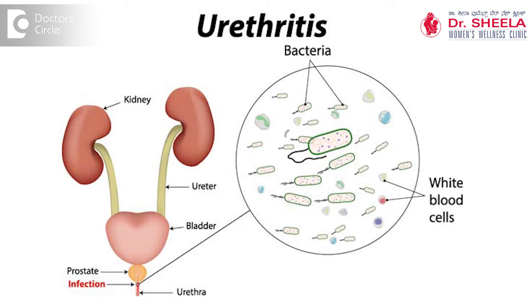What are the organisms which cause urethritis? The most common organism is E. coli and other bacteria which are present in the stool. The next common cause is sexually transmitted diseases like gonorrhea caused by gonococci, trichomoniasis caused by Trichomonas vaginalis, chlamydia caused by Chlamydia trachomatis, and herpes simplex can also lead to urethritis. These are the sexually transmitted diseases which limit themselves to the urethra.